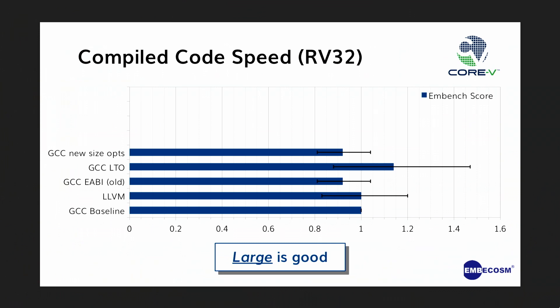We've also been working with our colleagues at Western Digital on improving GCC's code density, so we've got some new optimizations in to try and improve code size. There is a penalty of course — when you optimize for code size, performance goes down a bit.